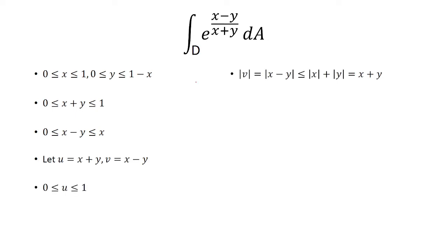And then, now if we look at the absolute value of v, well we know v is x minus y. So by using the triangle inequality here, this has to be less than or equal to the absolute value of x plus the absolute value of y. And that's going to equal just x plus y, because we're looking at the first quadrant here. x and y are both going to be greater than or equal to 0. So you could just remove the absolute value. That means that the absolute value of v has to be less than or equal to u, because that's what we said u was over here. And so, that means v has to be between negative u and u.